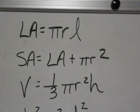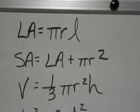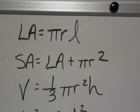Volume is one-third big B H. And again, the big B is pi R squared. So it's one-third pi R squared H.